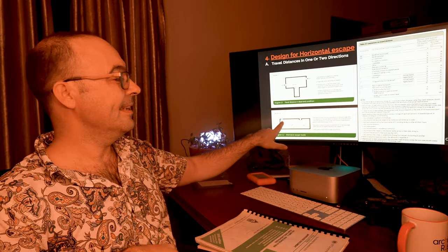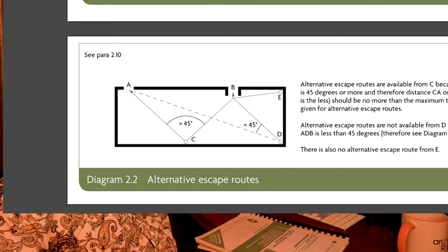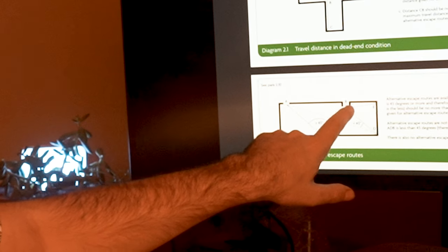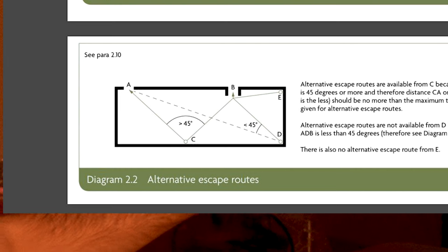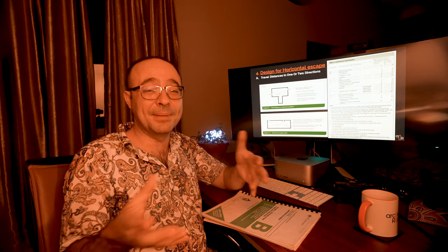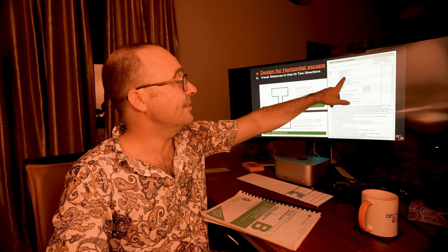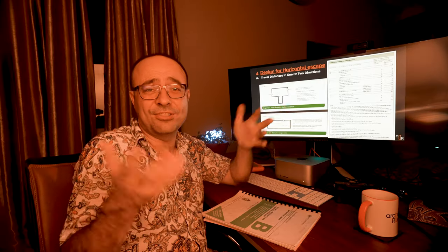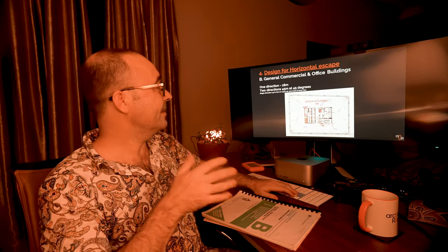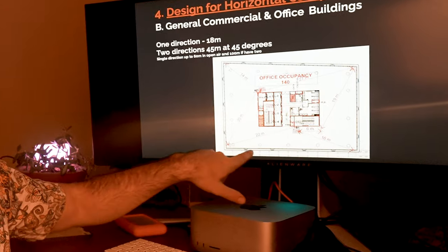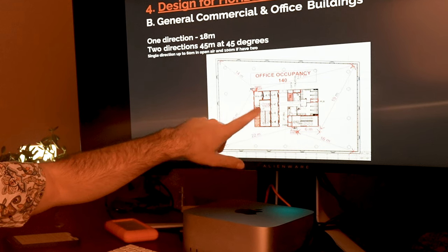You can see in this diagram here you've got 45 degrees for two fire escapes, but there's one escape here — obviously there's no 45 degrees, so that'll be 18 meters to that escape. That could be up to 45 meters with two escapes. This changes a little bit depending on the purpose group — there's table 2.1 that tells you the distances. But generally this is for most commercial buildings. This is an office building: everything's 18 meters to one escape stair, or 45 meters and 45 degrees to two escape stairs.